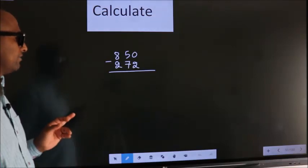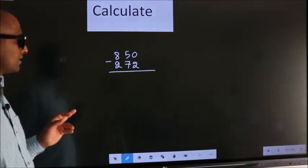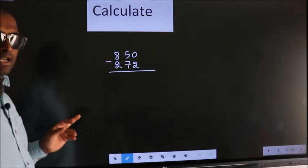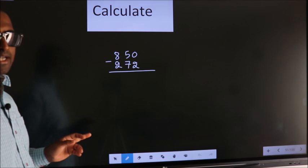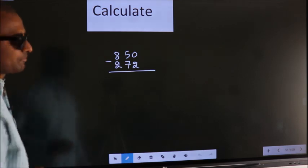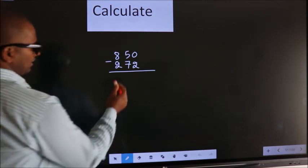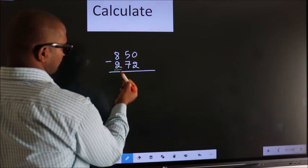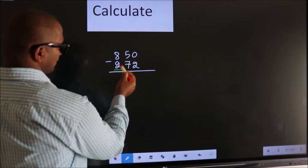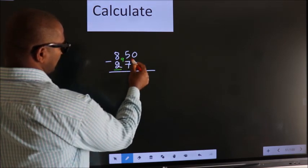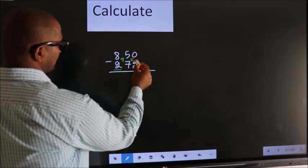Calculate 850 minus 272. How do we calculate this faster? You leave the first digit. Here you write 9, here you write 10.